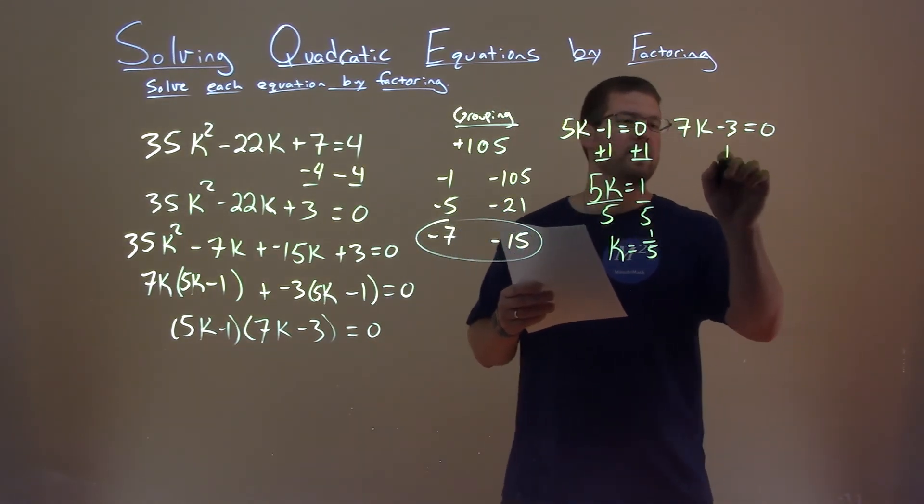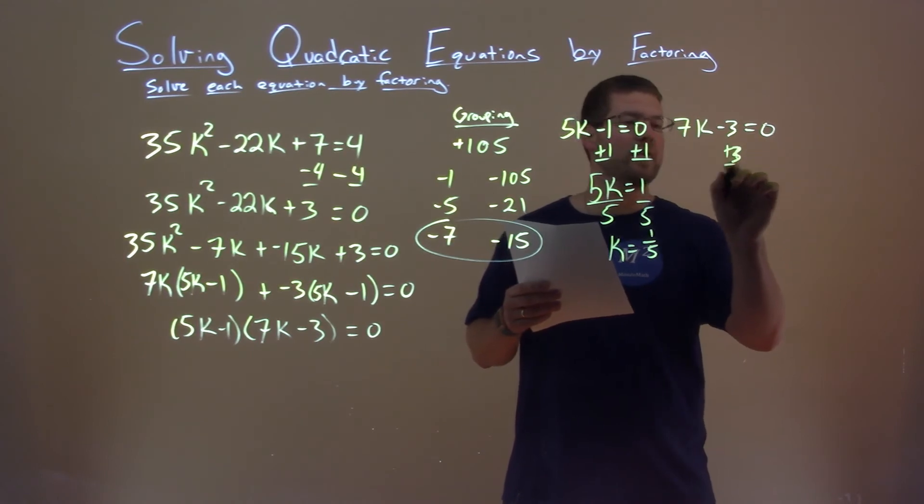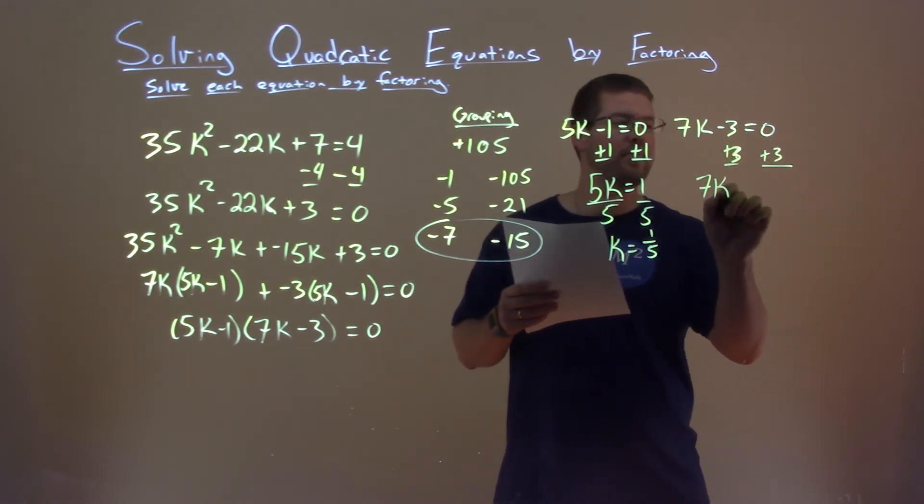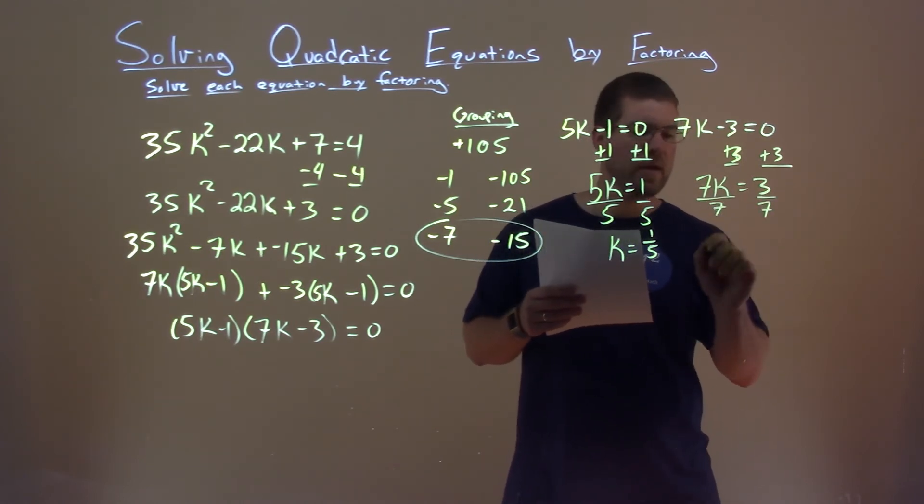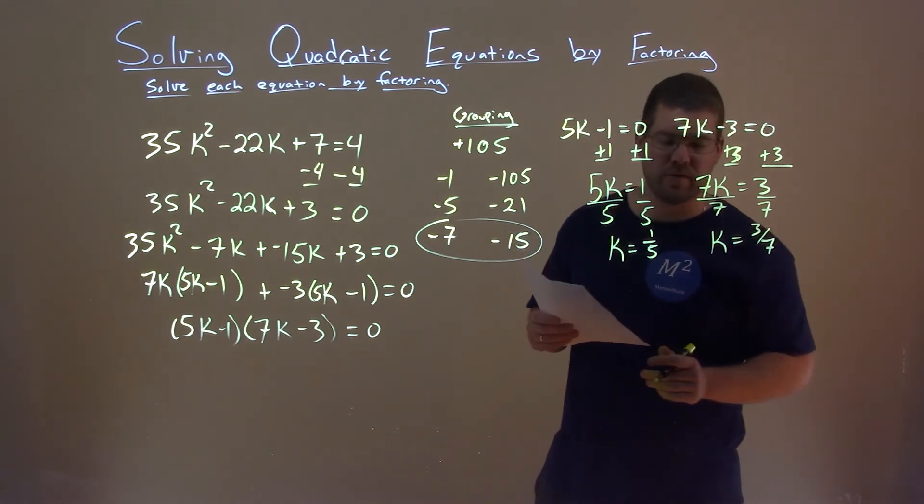Let's do the same thing here. We add 3 to both sides. 7k equals positive 3. Divide both sides by 7, and k equals 3 sevenths.